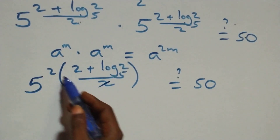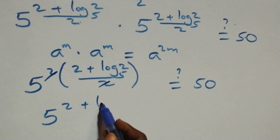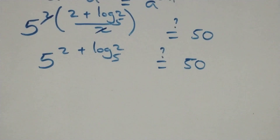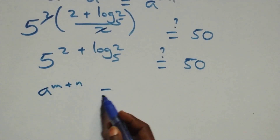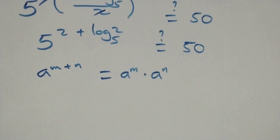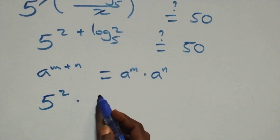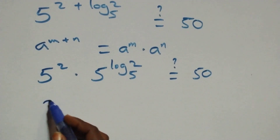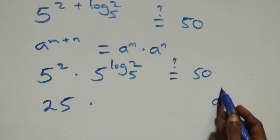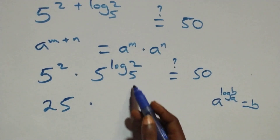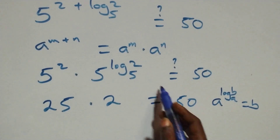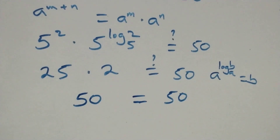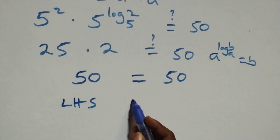The two in the numerator cancels with the two in the denominator, giving five raised to power two plus log two base five. This equals five squared times five raised to power log two base five, which equals fifty. Here five squared is twenty-five. And by the identity a raised to power log b to base a equals b, we have five raised to power log two base five equals two. So twenty-five times two equals fifty, which equals fifty. Left hand side equals right hand side.